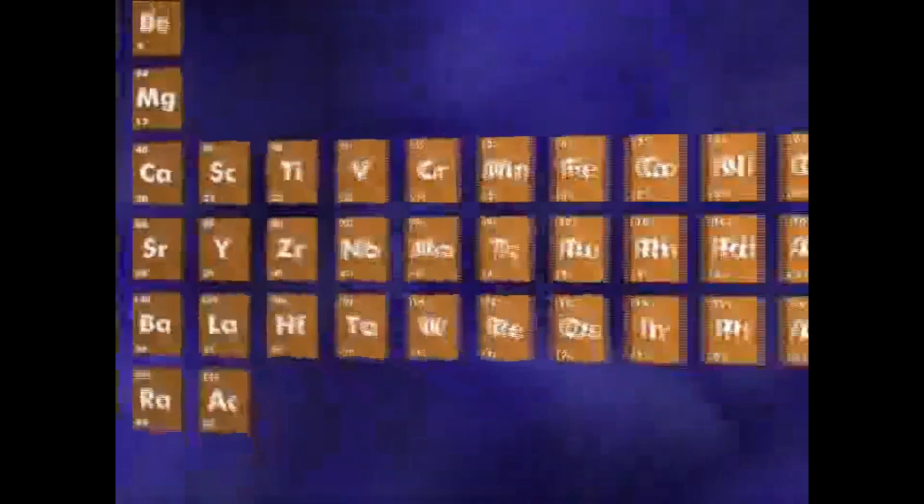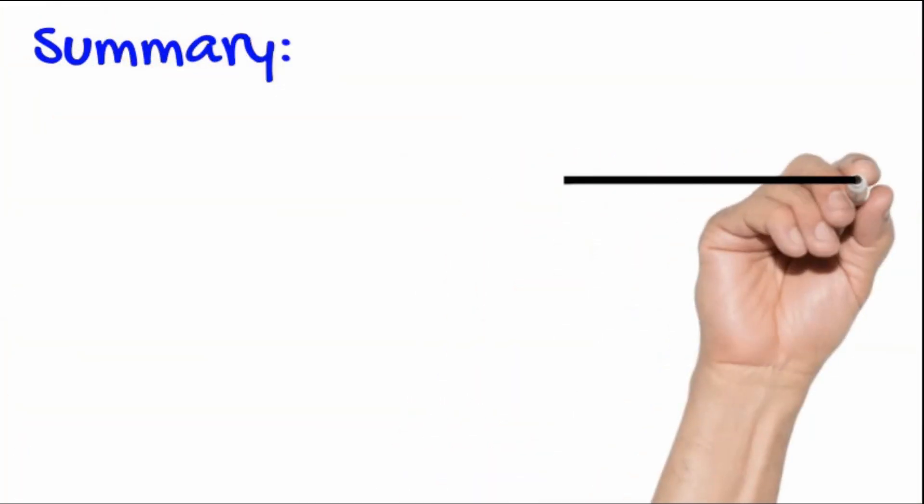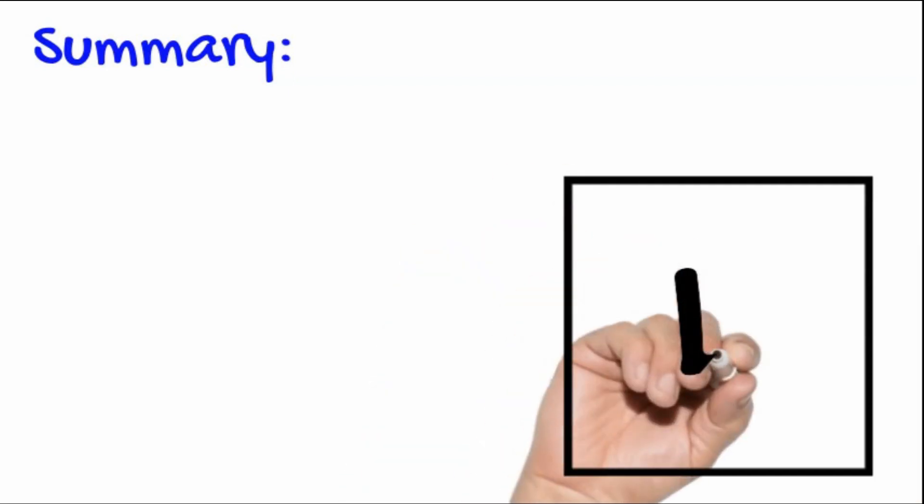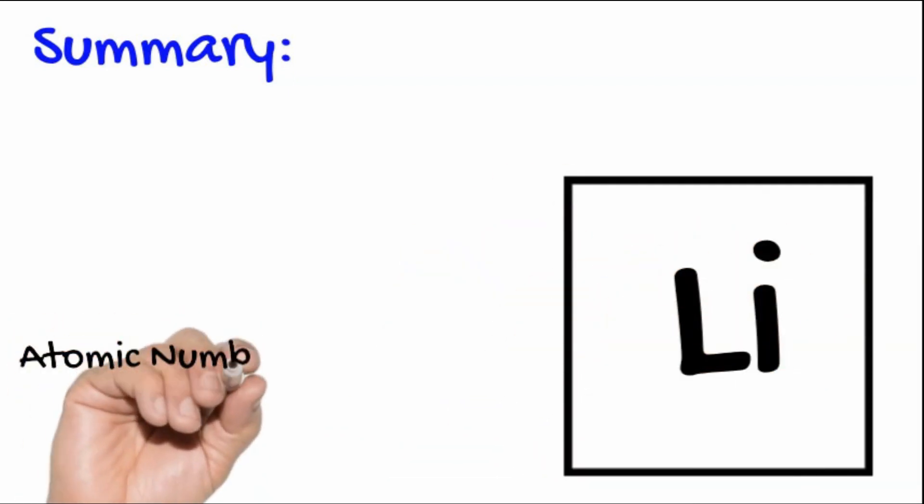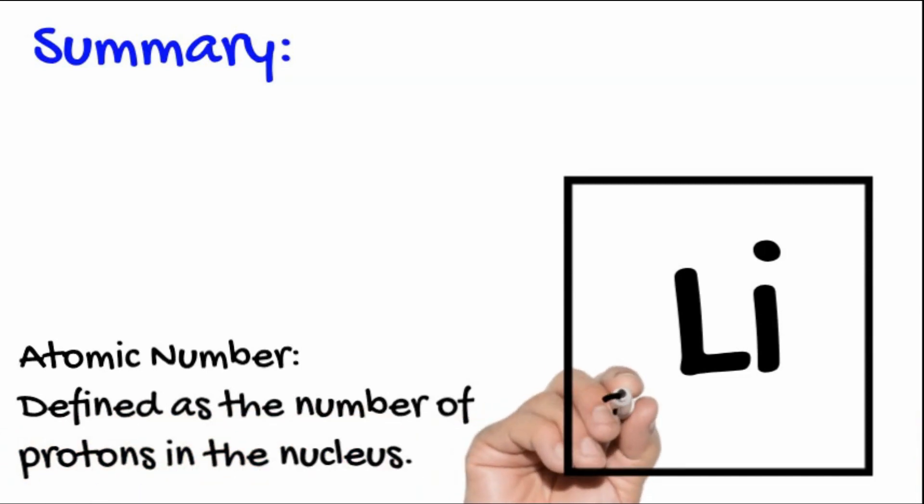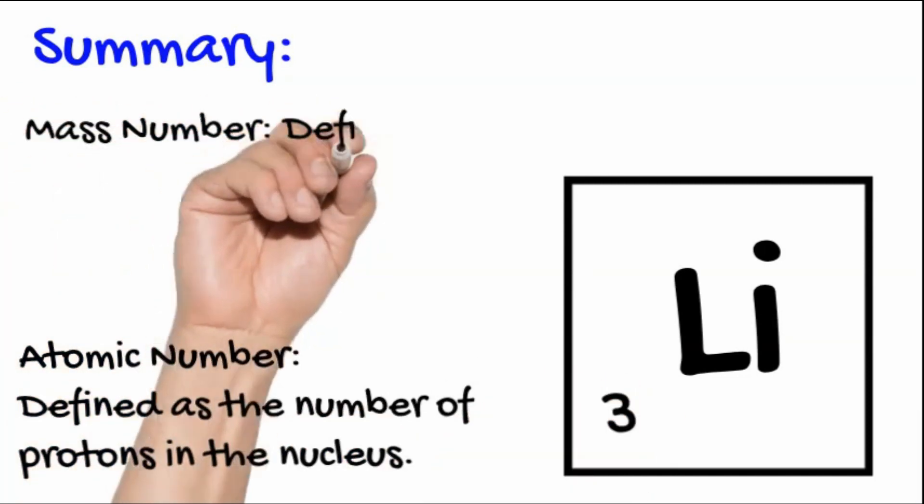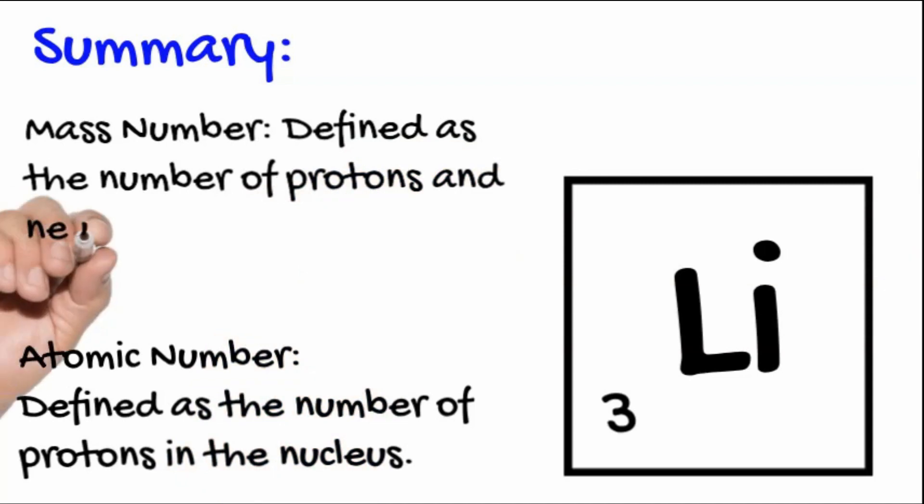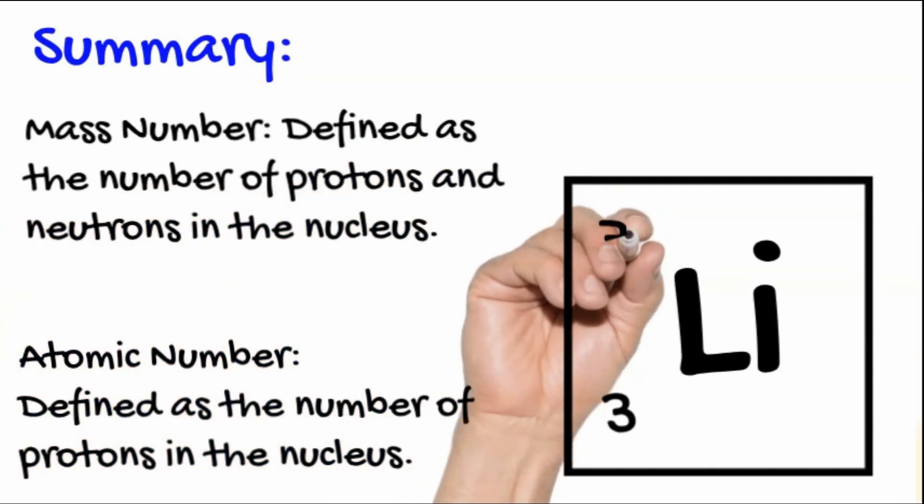For every element, atomic number is unique. Again, in summary, using lithium as an example: The atomic number is defined as the number of protons in the nucleus. For lithium, that's three. The mass number is defined as the number of protons and neutrons in the nucleus. In this case, seven. We might use the mass number to describe the atom. For example, this would be lithium seven.